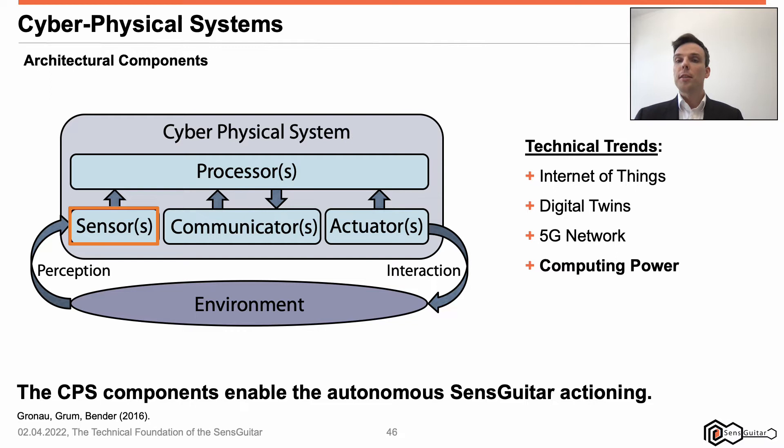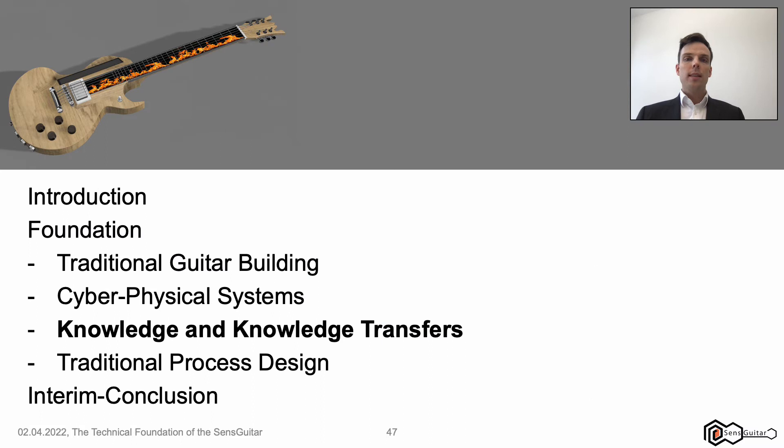Further, price per computing power has reduced and storage capacities have increased. Since computing power has increased drastically in recent times, fast and efficient processing is supported and latencies can be reduced. The following intends to show how these cyber-physical system architecture components have been considered by the sense guitar, and why these are the basis for its autonomous actioning.